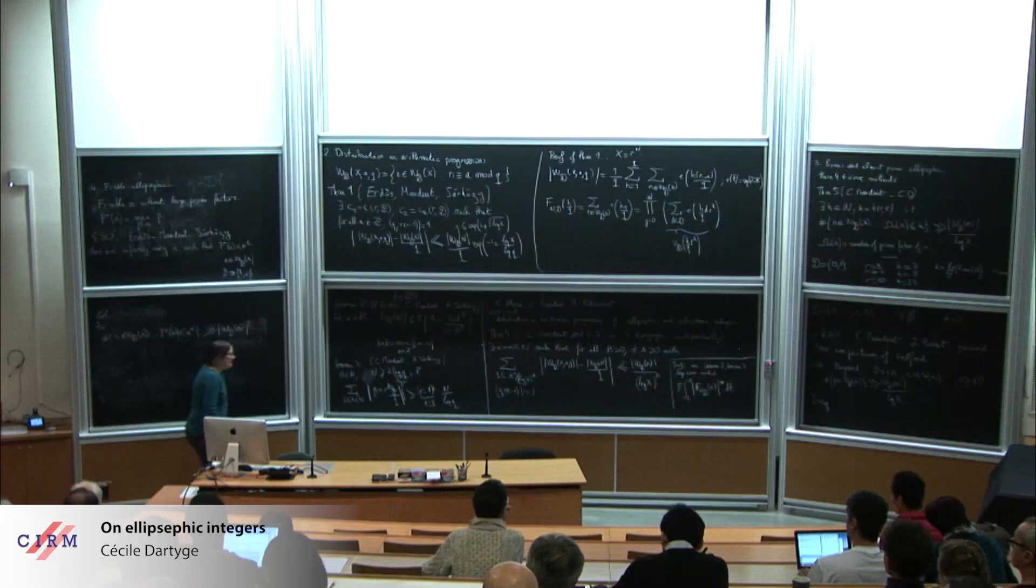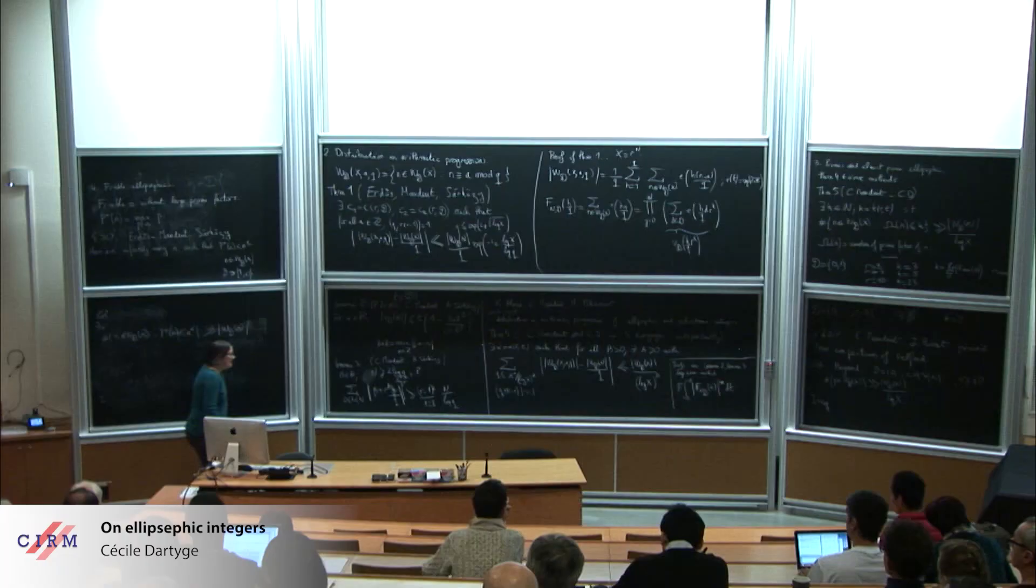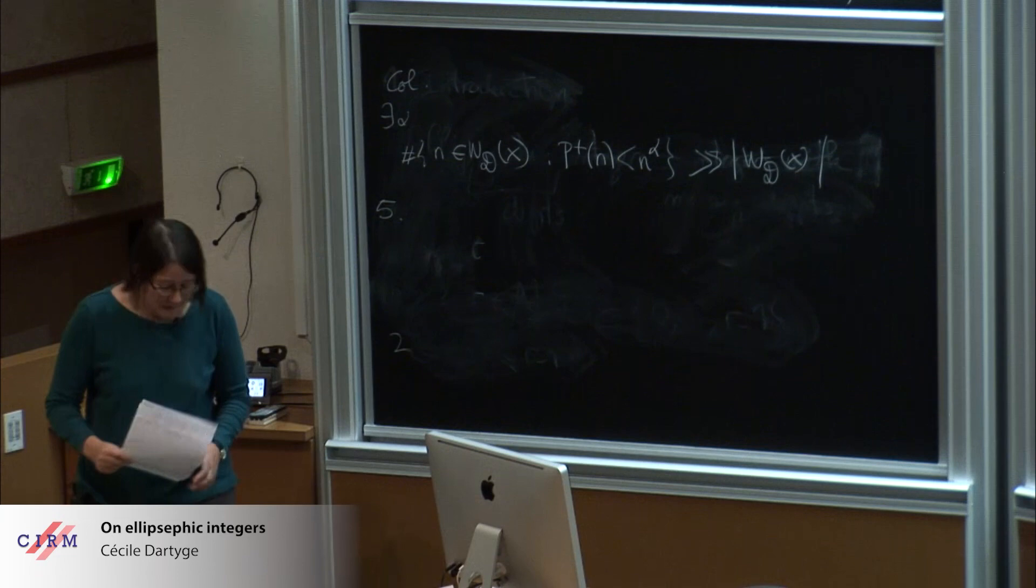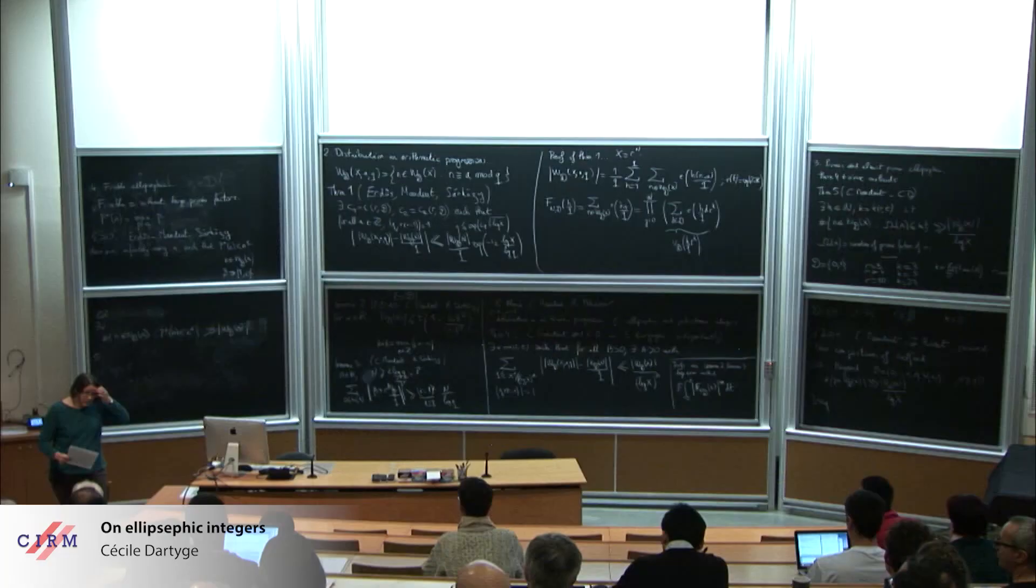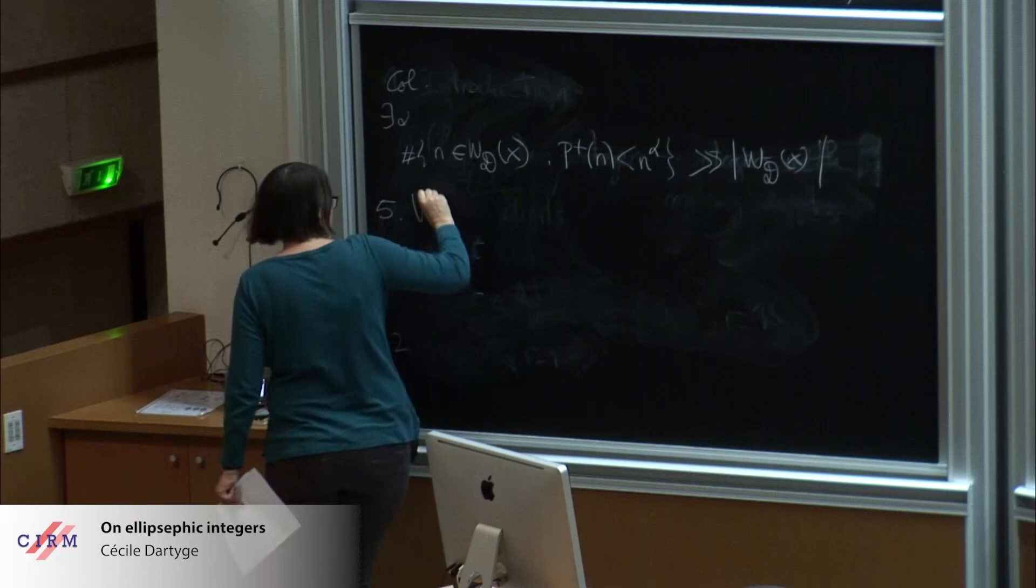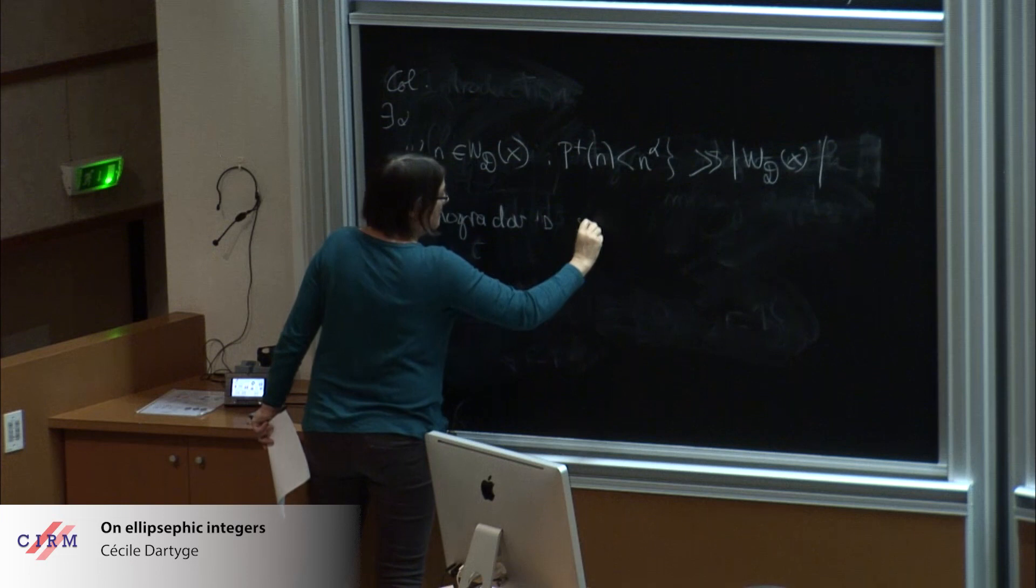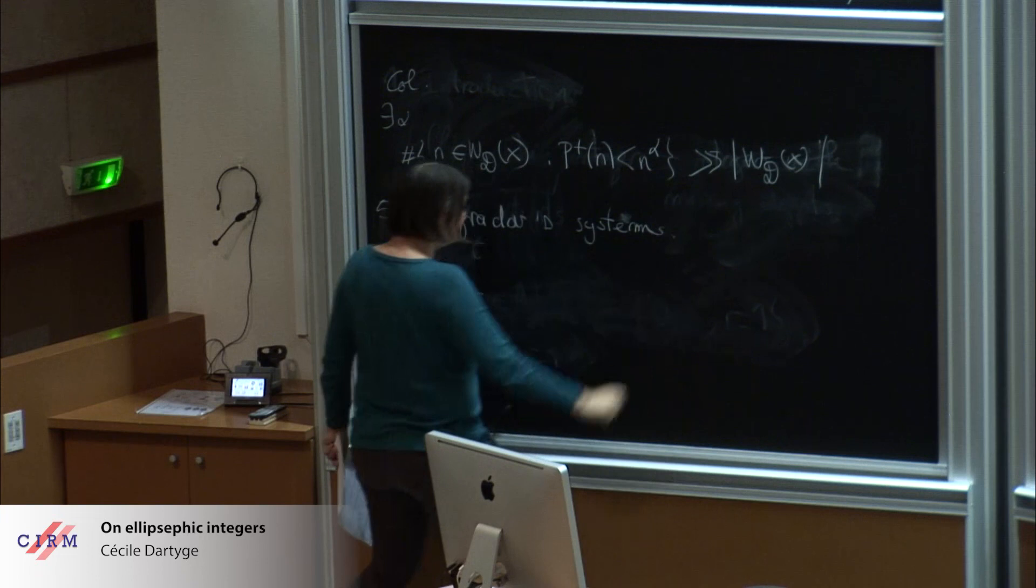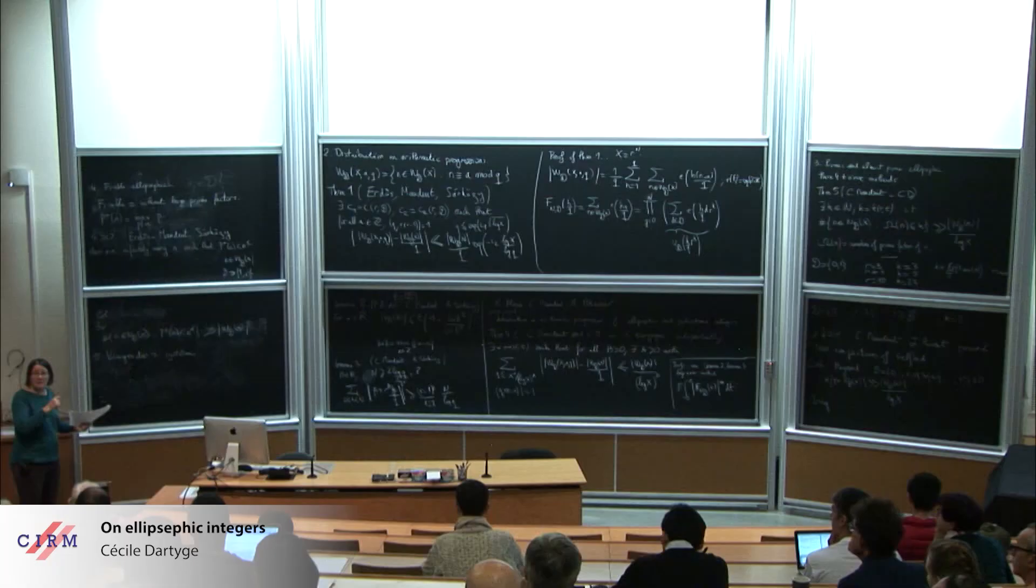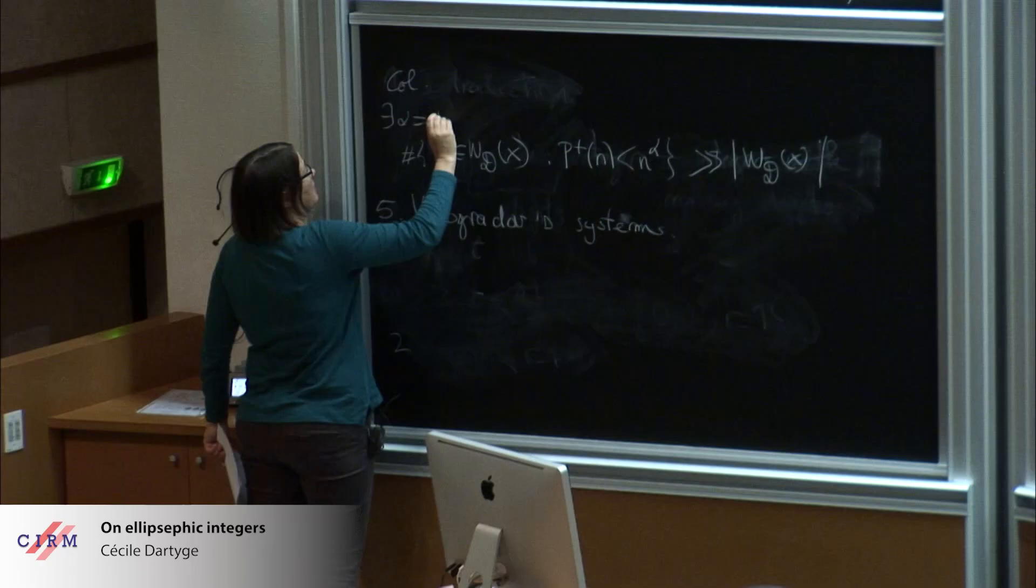I will try to finish but I have many things to say. I will quote recent works also on ellipsific integers in Vinogradov systems. What is Vinogradov systems? It is systems of diophantine problems arising for example in Waring's problems. Alpha belongs, depends on r and d, strictly positive.